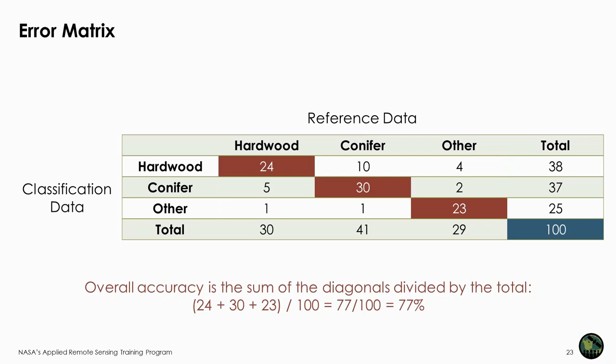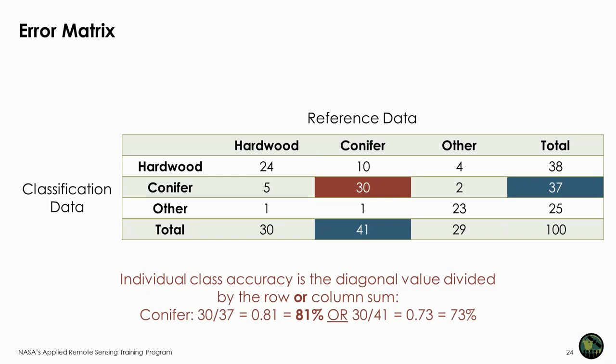The overall accuracy of the land cover classification is calculated by summing the diagonals and dividing by the total. In this example, the overall accuracy is 24 plus 30 plus 23 divided by 100, which equals 0.77 or 77% accuracy. The individual class accuracy is the diagonal value for that class divided by the row or column total. For conifer, that gives either 30 divided by 37, which is 81%, or 30 divided by 41, which is 73%. So what does this mean, and which one do you choose?